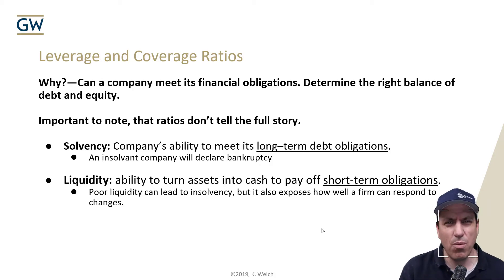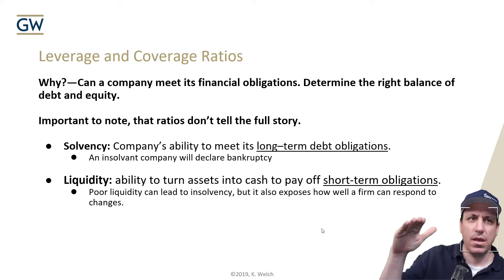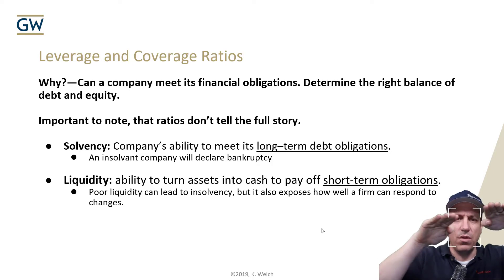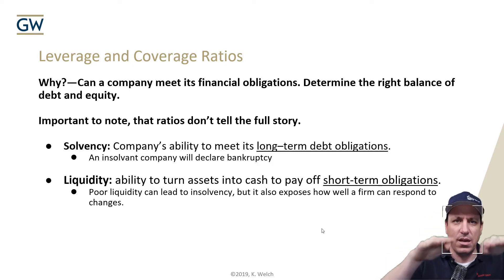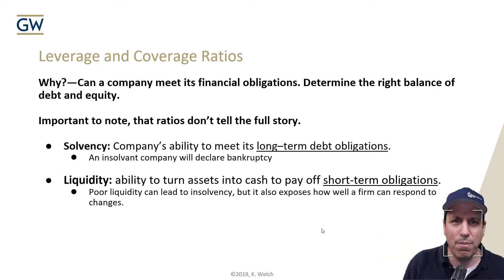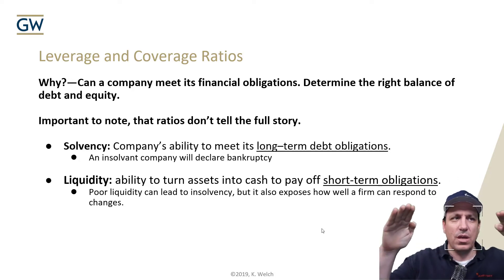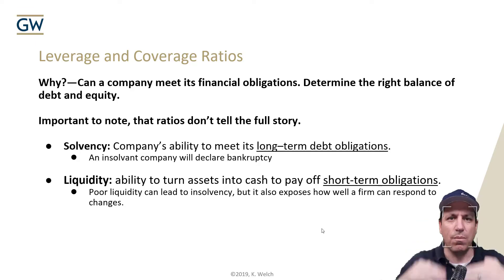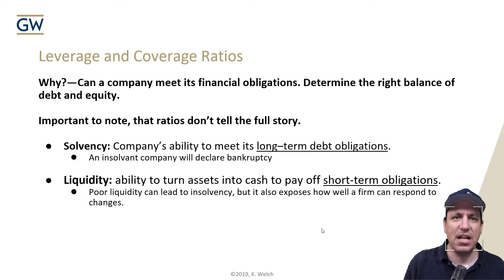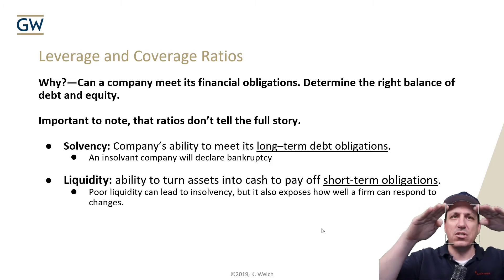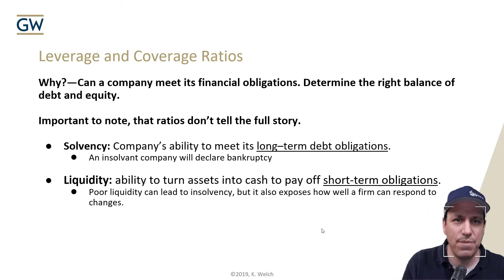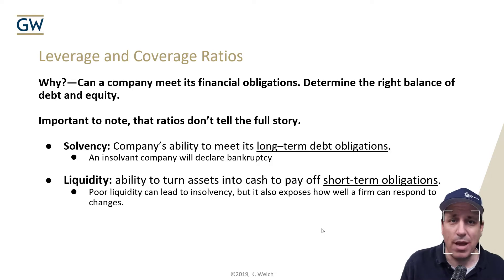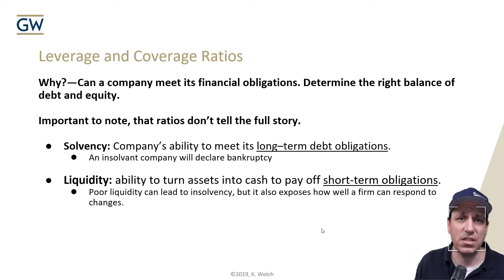Solvency is particularly important. A lot of people reach what I call the event horizon of debt. Think about a black hole — the event horizon is where light can no longer escape the gravitational pull. Debt has a similar effect: you can get so in debt that you can't escape that gravitational pull down to bankruptcy. Solvency analysis tries to determine if you're getting close to, or have passed, that breaking point of spiraling into chapter 11 and declaring bankruptcy.